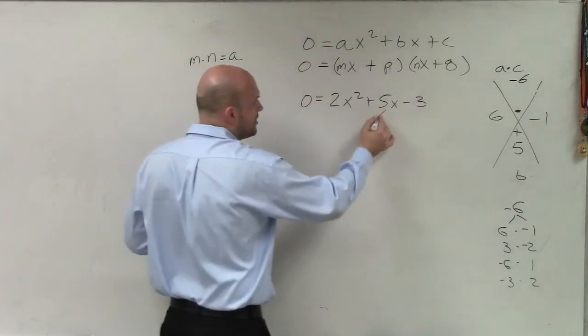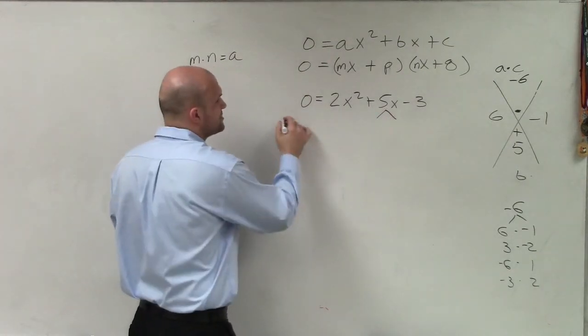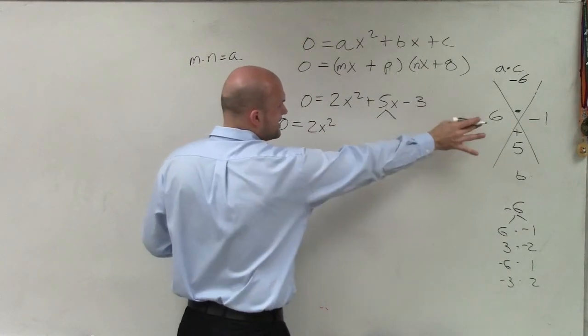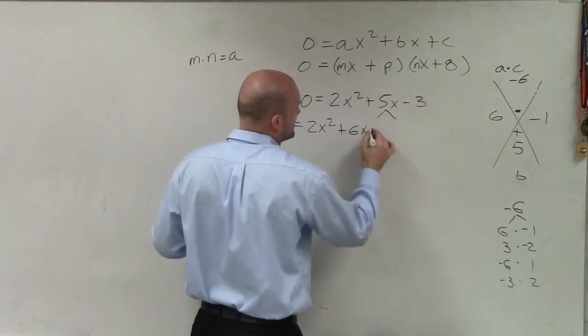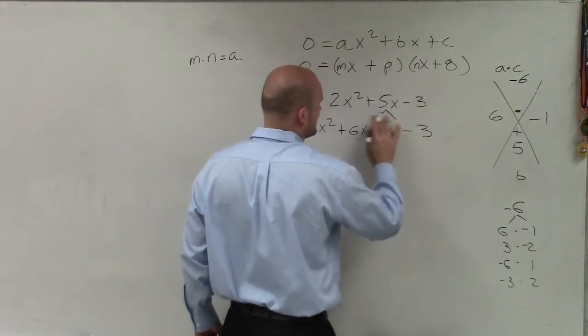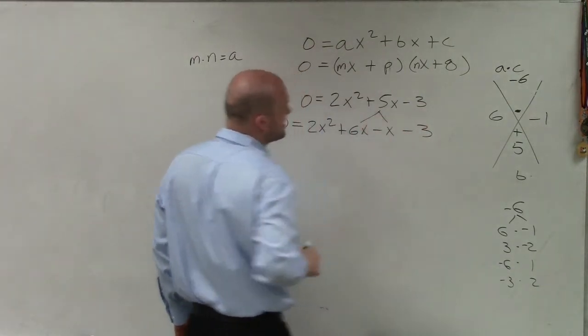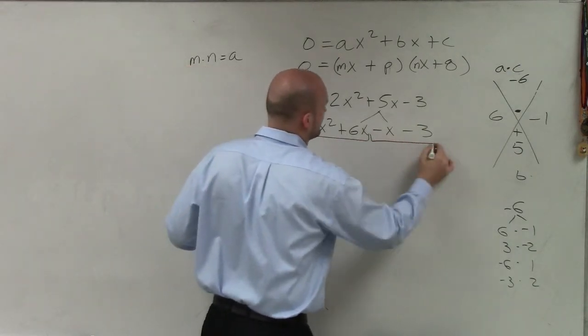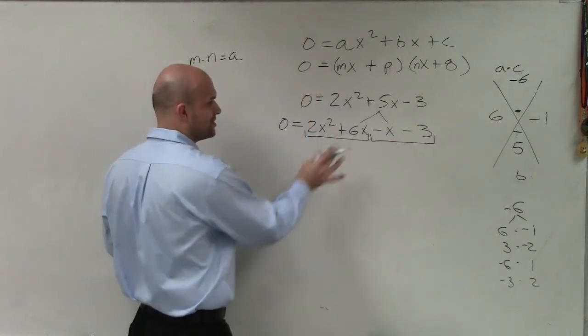is you can break apart your middle term, which we'll use the grouping technique. So I say 2x². I'll take these two terms plus 6x minus x minus 3. So what I did is I broke up 5x into 6x minus x. And now I factor by grouping my first two and my last two terms.